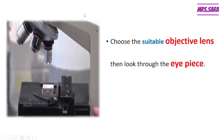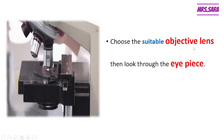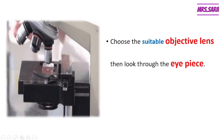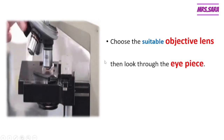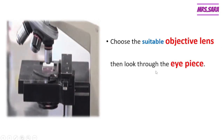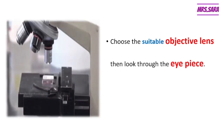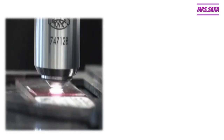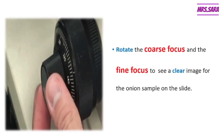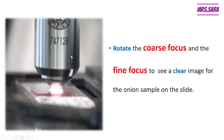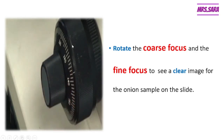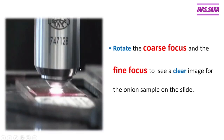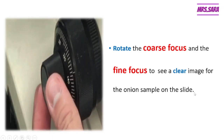After choosing the suitable objective lens, look through the eyepiece. We have low and high power objective lenses. Then start to rotate the coarse focus and the fine focus to see the clear image of the onion sample on the slide.